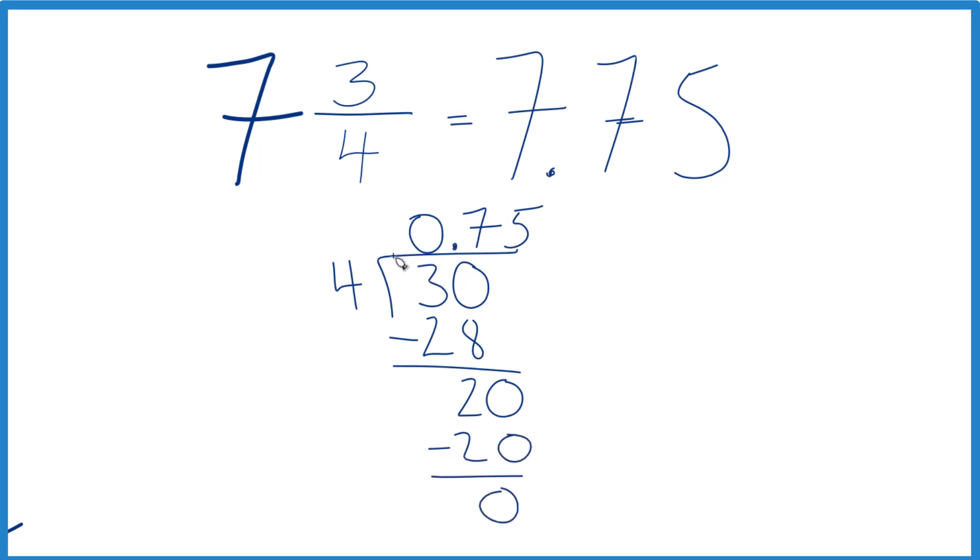So when we divide three by four, we get 0.75. The fraction three-fourths is 0.75. So seven plus 0.75, or you could call it 0.75, that equals 7.75.